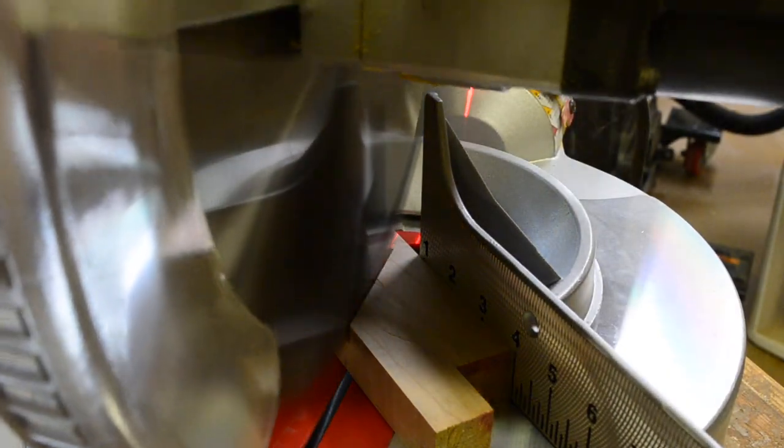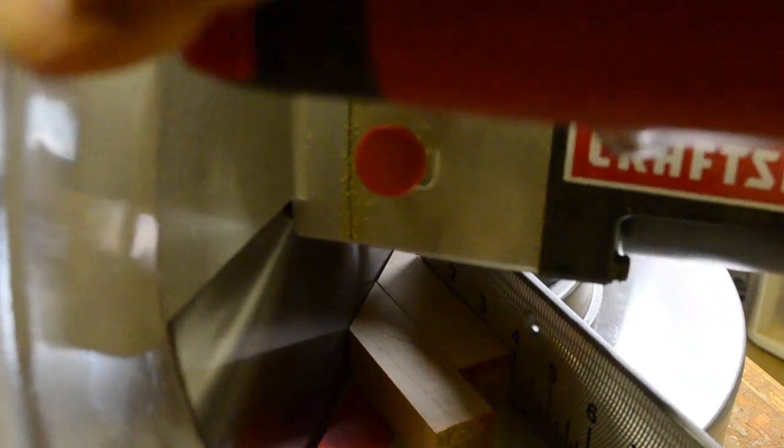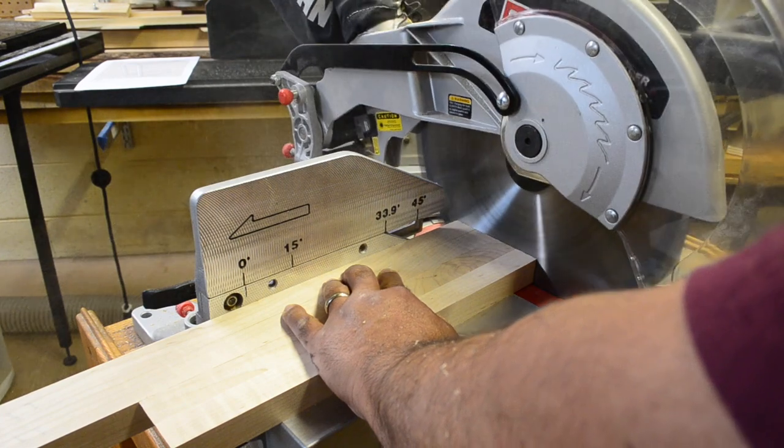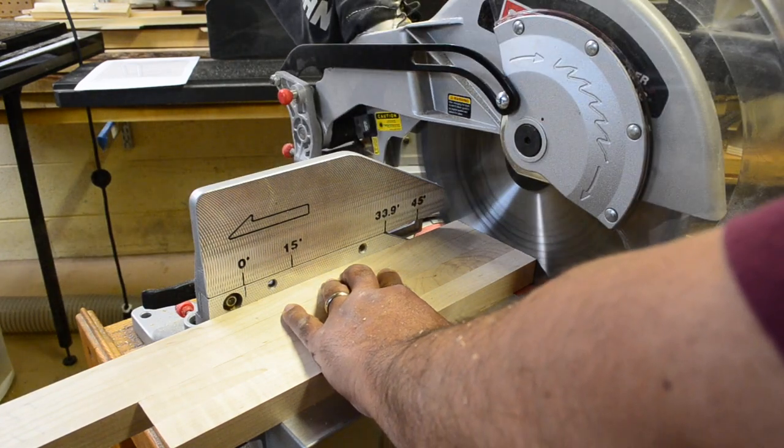For the table support arms and feet, I cut a 45-degree angle at one end and then square these off with a 90-degree cut at the other.